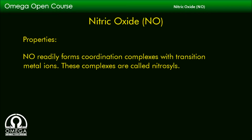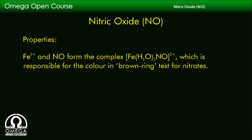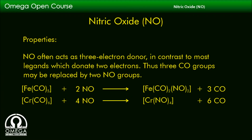NO readily forms coordination complexes with transition metal ions. These complexes are called nitrosyls. Fe²⁺ and NO form the complex [Fe(H2O)5NO]²⁺, which is responsible for the color in the brown ring test for nitrates. NO often acts as a 3-electron donor, in contrast to most ligands which donate 2 electrons. Thus, 3 CO groups may be replaced by 2 NO groups. For example: Fe(CO)5 + 2NO → Fe(CO)2(NO)2 + 3CO, and Cr(CO)6 + 4NO → Cr(NO)4 + 6CO.